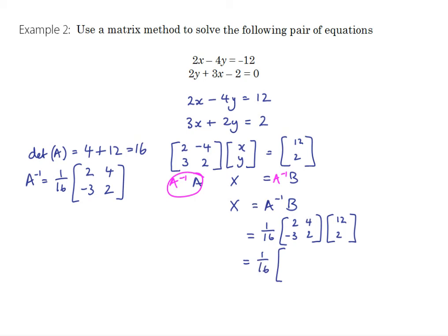We've got row times column: top row times column so 24 plus 8 is 32, and bottom row times column so negative 36 plus 4 is negative 32. And so 16 goes into both of those: 2 and negative 2. Therefore x equals 2, y equals negative 2.